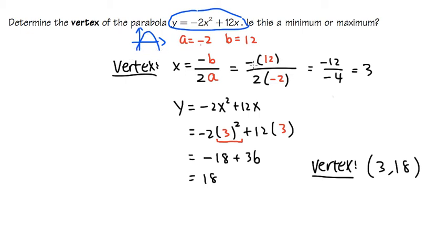And then the vertex, 3 comma 18, it's going to be right here. Right? That's the vertex. And as you can see, this is going to be the highest point of the parabola. Therefore, this point right here is a maximum. Okay? So, that's it.